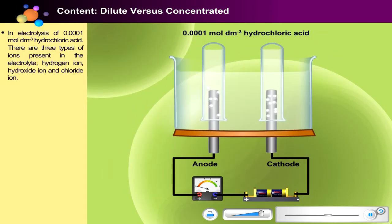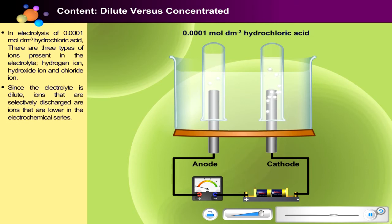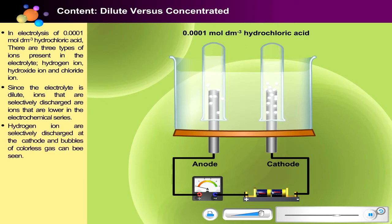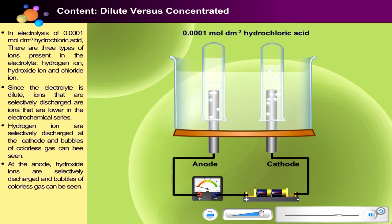In electrolysis of 0.0001 mol/dm³ hydrochloric acid, there are three ions present in the electrolyte: hydrogen ion, hydroxide ion, and chloride ion. Since the electrolyte is dilute, ions that are selectively discharged are ions that are lower in the electrochemical series. Therefore, hydrogen ions are selectively discharged at the cathode and bubbles of colorless gas can be seen. At the anode, hydroxide ions are selectively discharged and bubbles of colorless gas can be seen. Can you guess a suitable test to determine the gas produced at the cathode and anode?